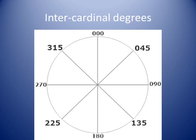The intercardinal points expressed in degrees are as follows. Northeast is zero four five degrees. Southeast is one three five degrees. Southwest is two two five degrees. Northwest is three one five degrees.